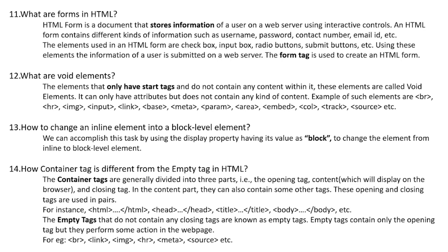Question 14: How is a container tag different from an empty tag in HTML? Container tags are generally divided into three parts: the opening tag, content which will display on the browser, and a closing tag. In the content part they can also contain other tags. These opening and closing tags are used in pairs — for instance, html, head, title, body, etc. Empty tags do not contain any closing tags. They contain only the opening tag but perform some action in the web page. Examples are br, link, img, hr, meta, source, etc.